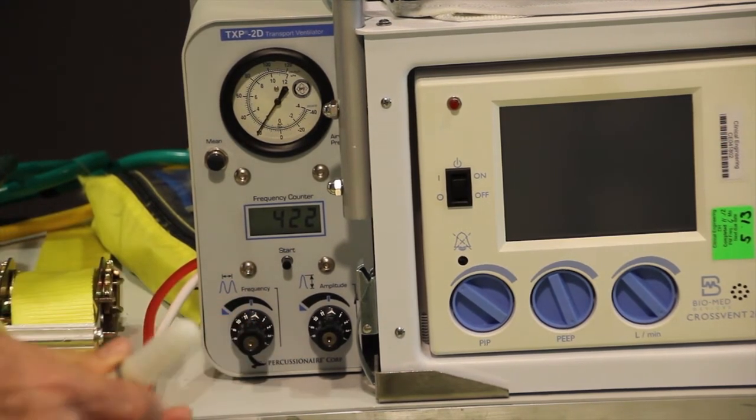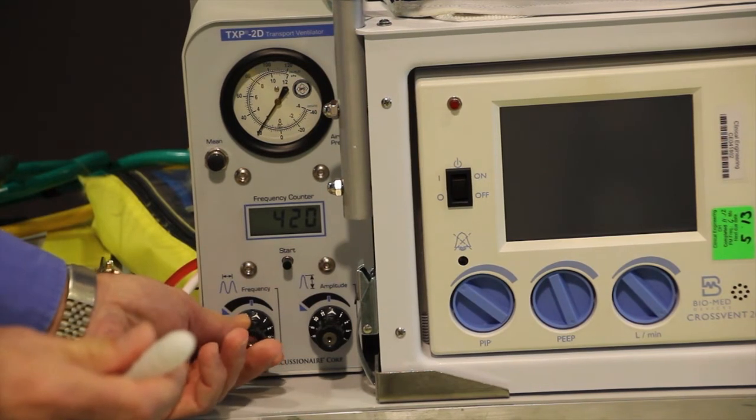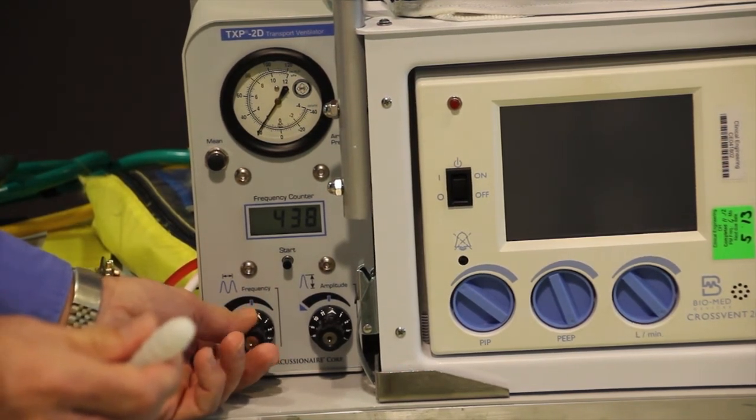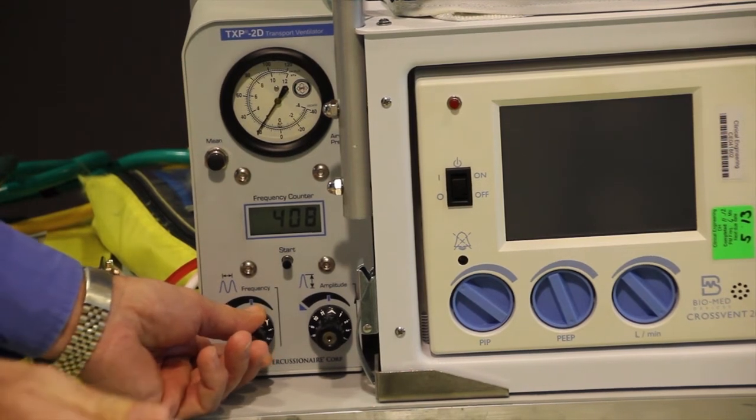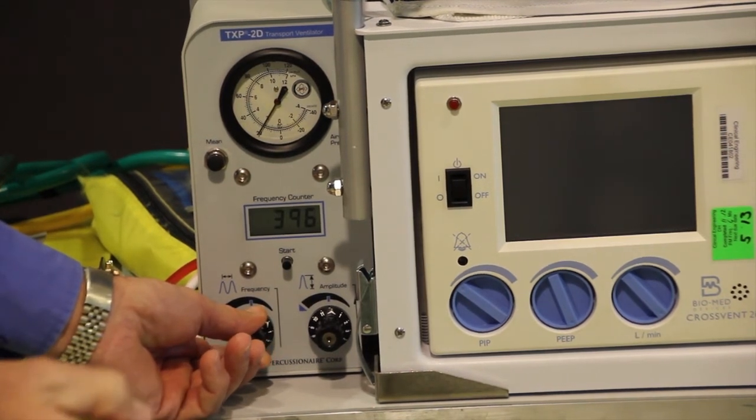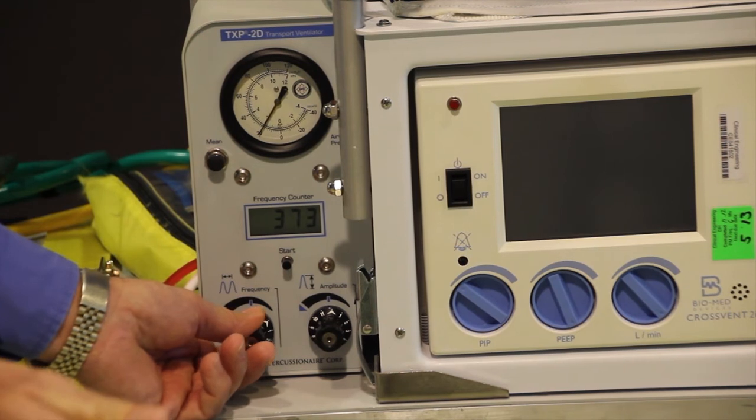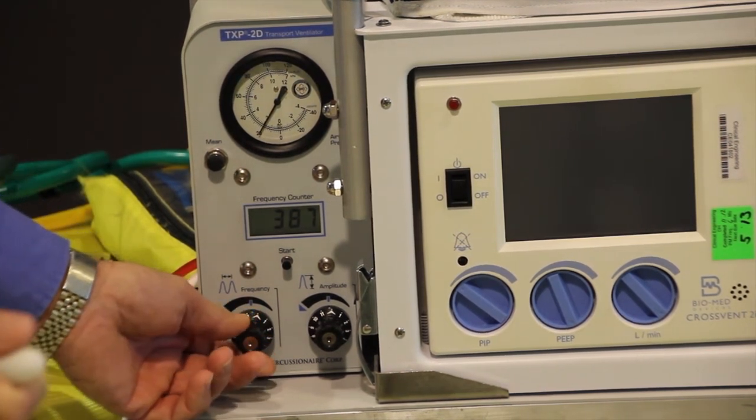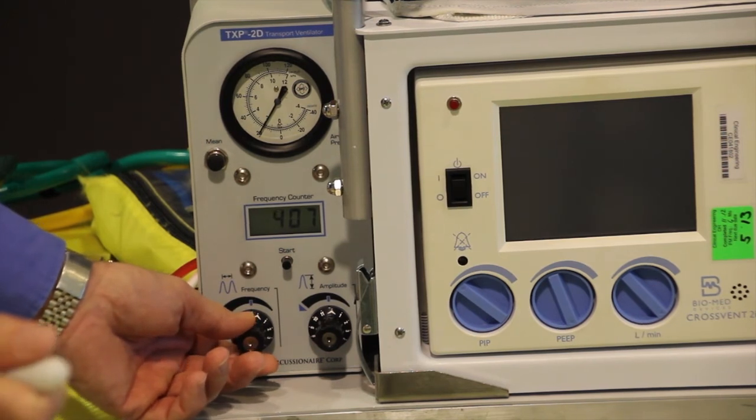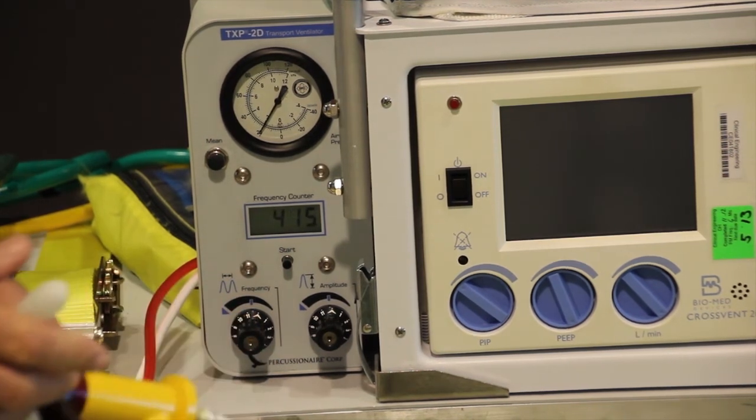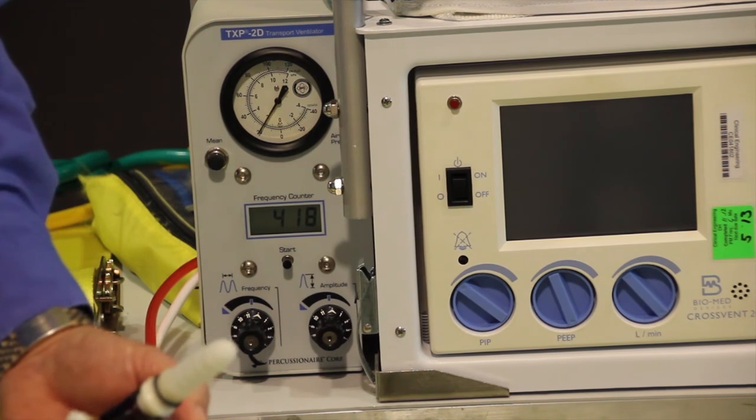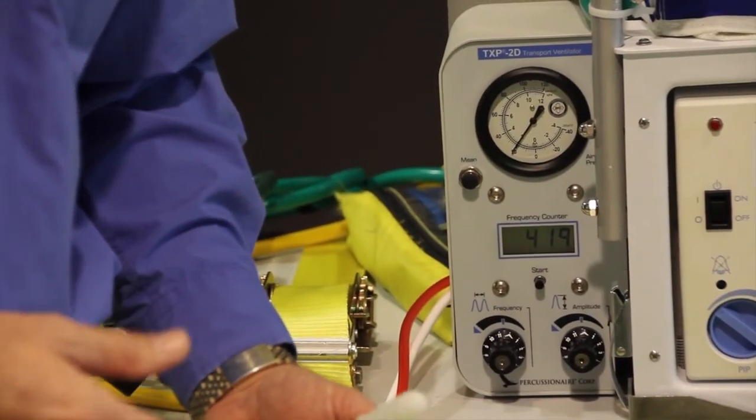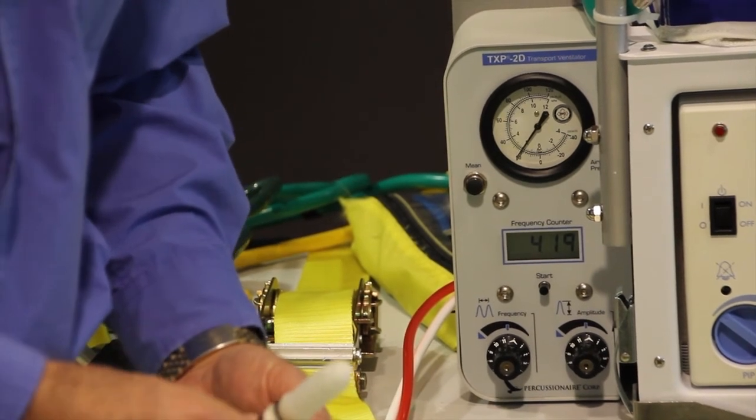I'm going to drop my frequency down just a little bit, and as you can see right now it's increasing the amplitude. So that's kind of a quick version of how to use the TXP. In addition to that, we have a setup guide for different disease processes that we'll follow, and we'll cover that in more detail later. Thank you.